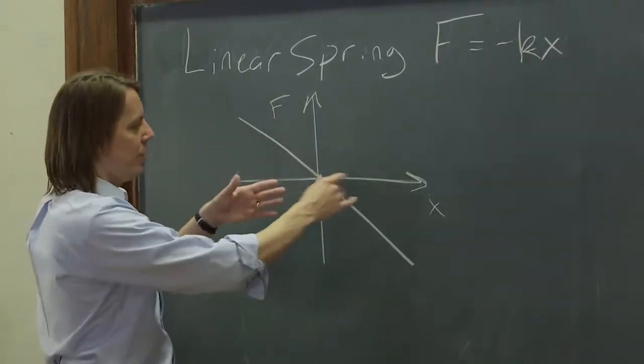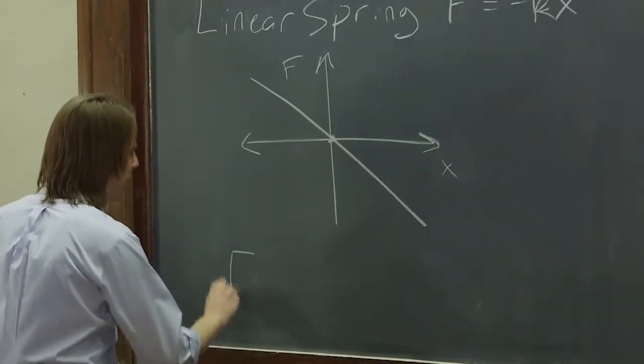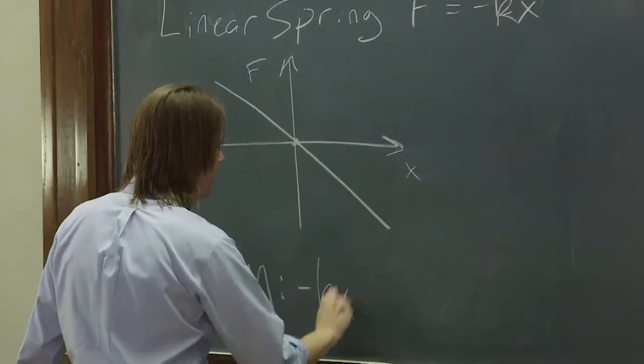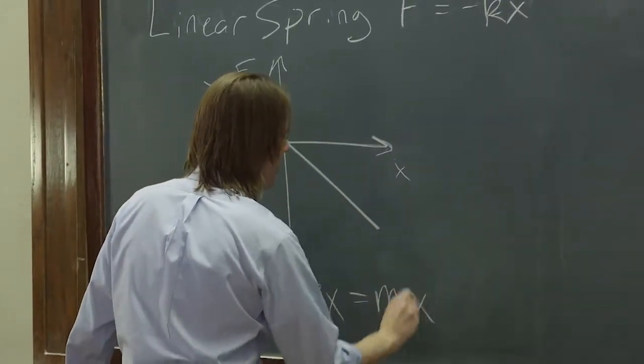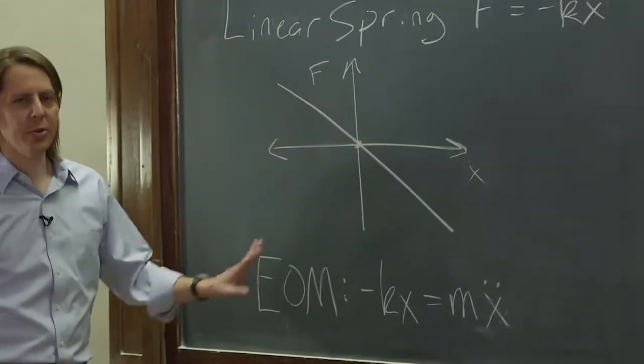So the force is linear with x, but what linear here really means is when we wrote the equation of motion, we got that minus kx equals mx double dot. So our equation of motion is also linear.